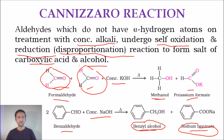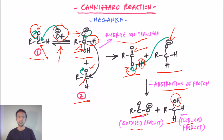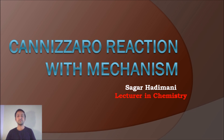A common doubt is why aldehydes must lack alpha hydrogen atoms for the Cannizzaro reaction. The reason comes from the first step of the mechanism: if alpha hydrogen atoms are present, the OH⁻ will pick up that alpha hydrogen instead of attacking the carbonyl carbon, promoting enolization and aldol condensation rather than the Cannizzaro pathway. Therefore, the key condition is that only aldehydes without alpha hydrogen atoms can undergo the Cannizzaro reaction.